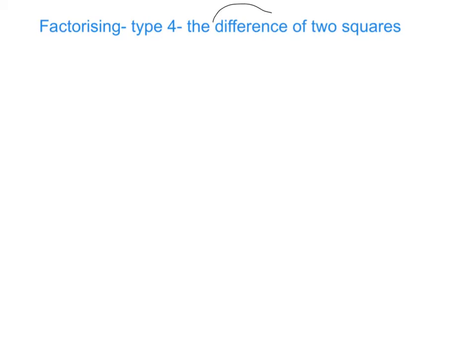Now, the word difference is basically trying to find out how far apart two things are. So the symbol that we use for that is the subtract symbol. That's going to really help us to recognise when we're dealing with the difference of two squares, which is type number 4. When we're talking about two squares, we're talking about square numbers. So we're always looking out for numbers that could be considered square numbers.